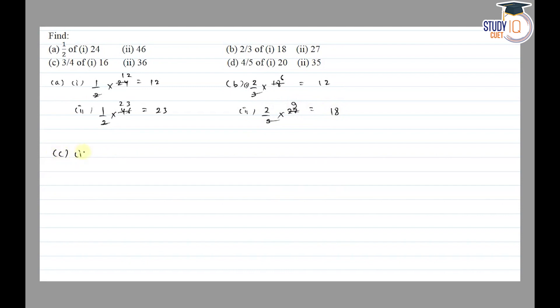Part (c): first 3/4 of 16 and second 3/4 of 36. So 4 goes into 16 four times, so 4 times 3 equals 12. And 4 goes into 36 nine times, so 9 times 3 equals 27.